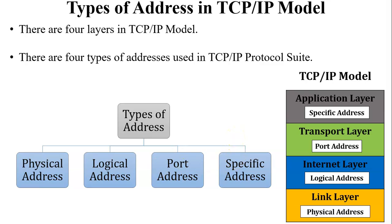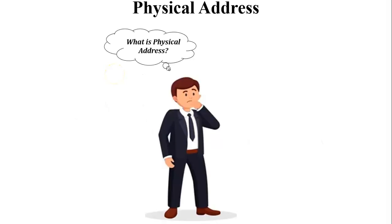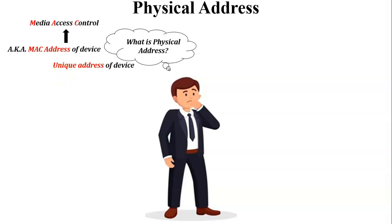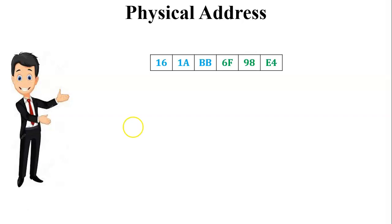Let us start with the physical address, or we can say MAC address. What is a physical address? Physical address means the unique address of a device. All devices used in the network have a unique address, which is the physical address of that particular device. This unique address is also known as the MAC address of the device — MAC means Media Access Control. The size of the MAC address is 48 bits or 6 bytes.